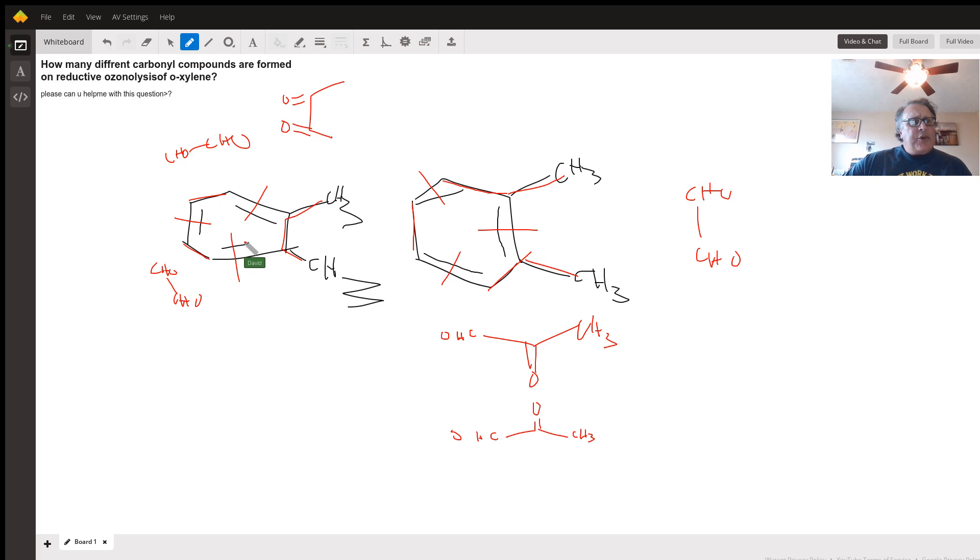And so I think the answer is how many different carbonyl compounds? Let's count them. Let's use another color, purple. So there's one unique carbonyl compound. There's another unique carbonyl compound. There's another unique carbonyl compound. The rest are repeats. I would say the answer is three. I would say the answer is there should be three unique carbonyl compounds for the reductive ozonolysis of xylene.